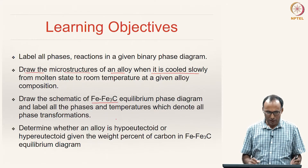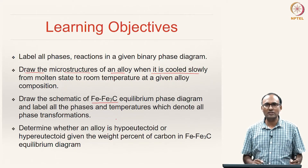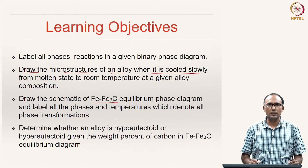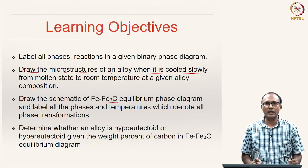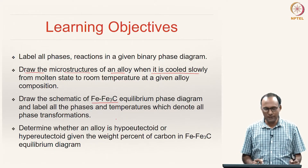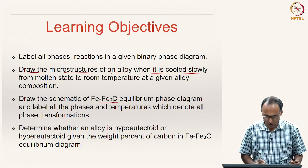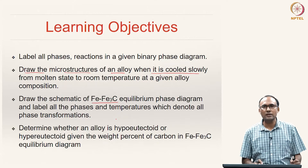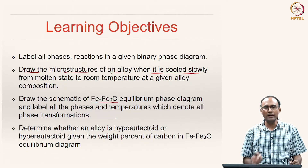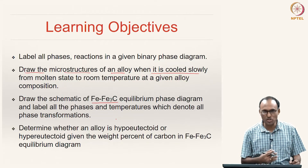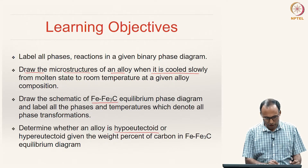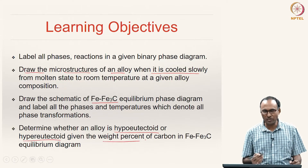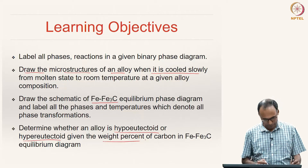The iron-carbon phase diagram is of extreme importance, particularly for mechanical engineers, because most of the machine components that we work with are made of steel, which is an alloy of iron and carbon. Hence we will spend a significant amount of time understanding the iron-iron carbide equilibrium phase diagram and the discussion thereafter. We should also be able to determine, given a composition, whether an alloy is hypo-eutectoid or hyper-eutectoid given the weight fraction or composition of the alloy.